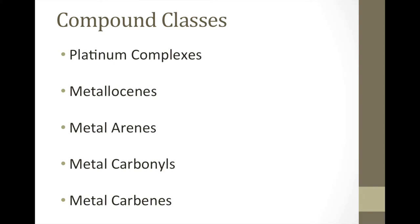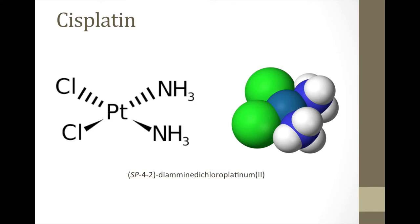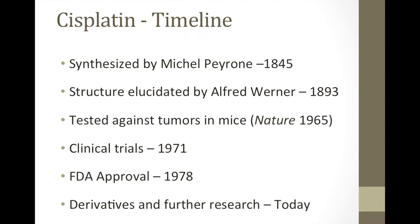The first drug we're going to look at is not necessarily organometallic because there are no organic components, but it is nonetheless a very important metallic anti-cancer drug, and that is cisplatin. You'll notice we have this platinum group — a square planar complex with two chloro groups and two amine groups. It was synthesized by Michael Peyron in 1845, almost 170 years ago, and the structure was first determined by Alfred Werner, the famous inorganic chemist, in 1893.